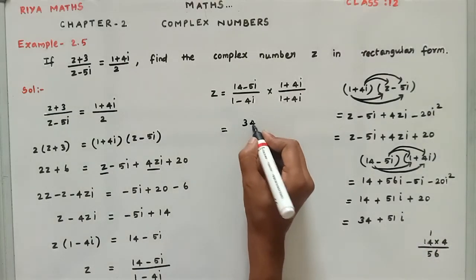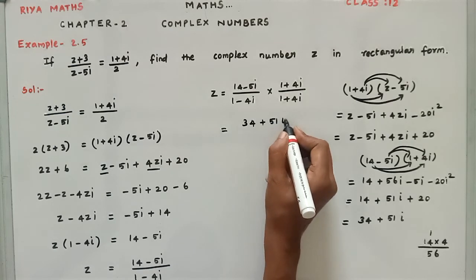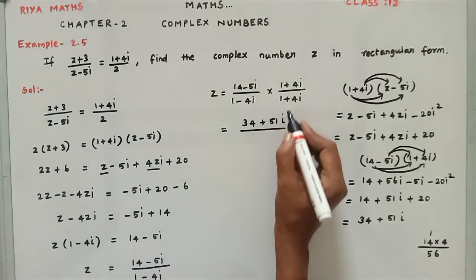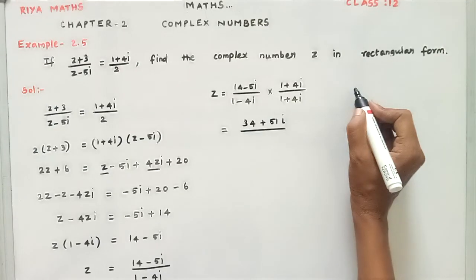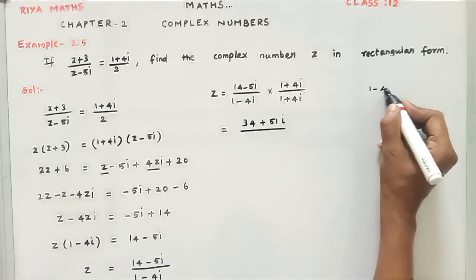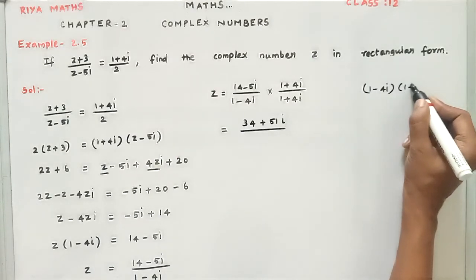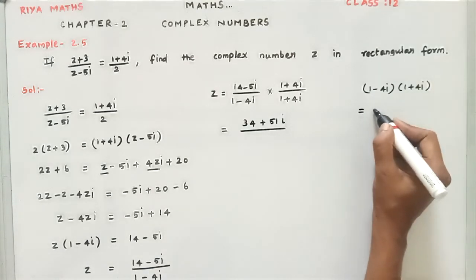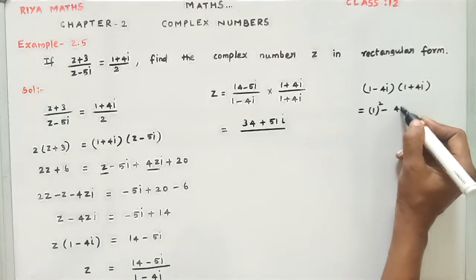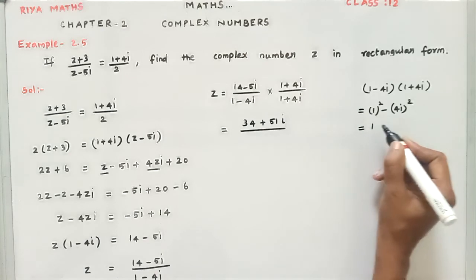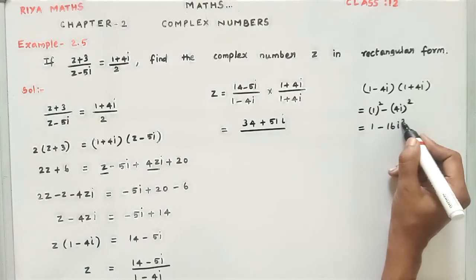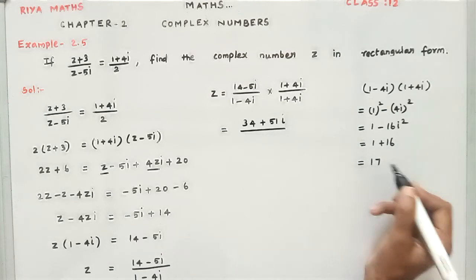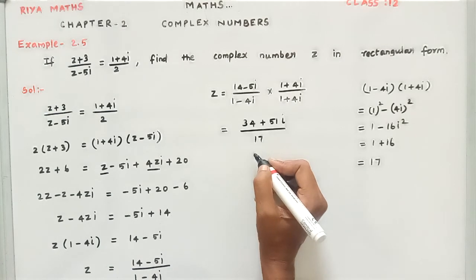For the denominator: (1 - 4i)(1 + 4i) is in the form (a - b)(a + b) = a² - b², which gives 1² - (4i)² = 1 - 16i² = 1 + 16 = 17. So the denominator is 17.